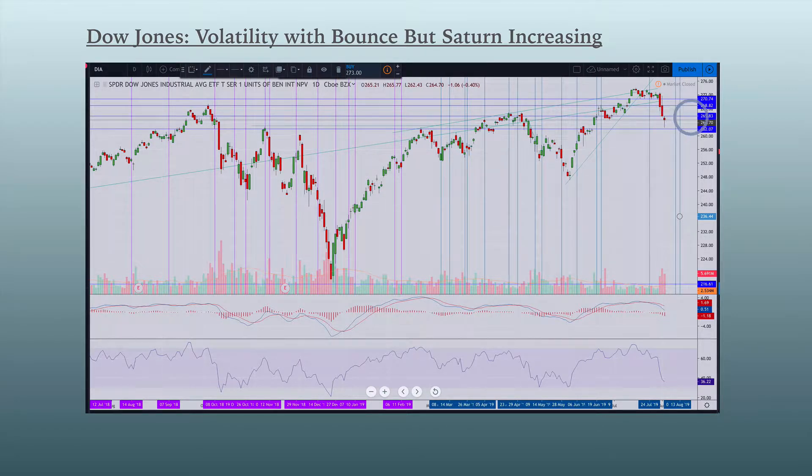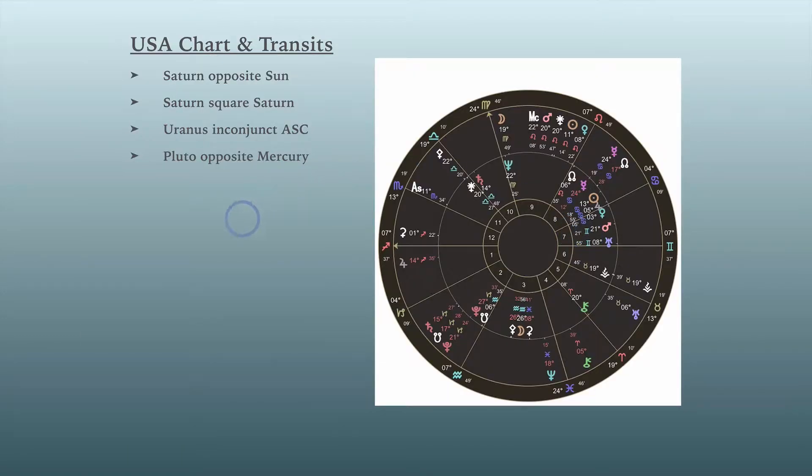I think we could bounce through August because I see more bearish energy and sentiment in general occurring in the U.S. in general in September. And let's get into that. So here's the U.S. chart. And often times I play, all those vertical lines in the preceding chart were based on looking at the Dow Jones astrology specifically.